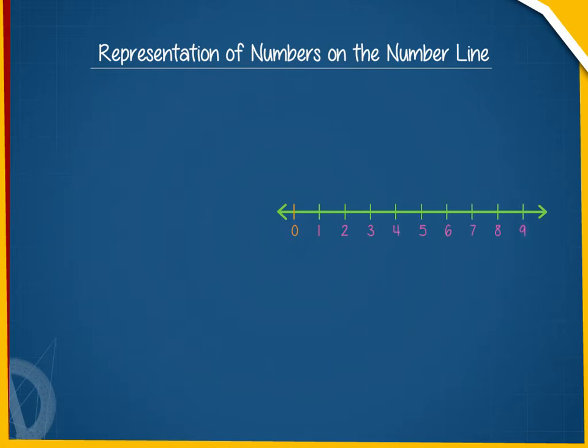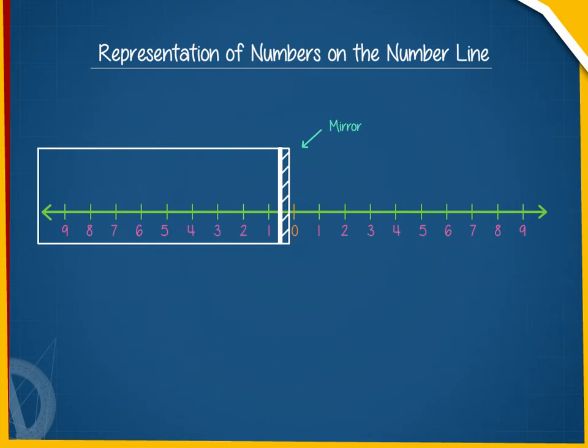If we keep a mirror at the marking of 0 such that it faces the numbers 1, 2, 3 and so on, we get an image of the number line on the mirror in the opposite direction.